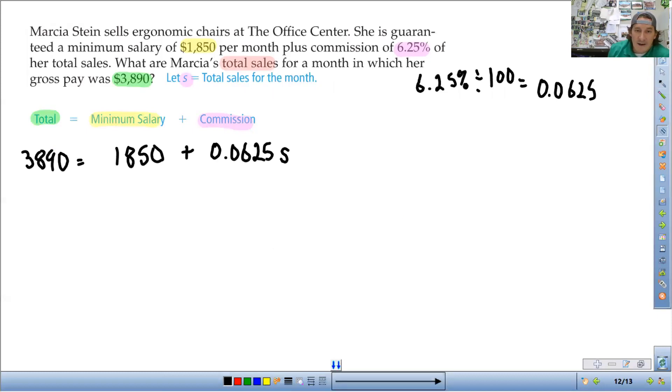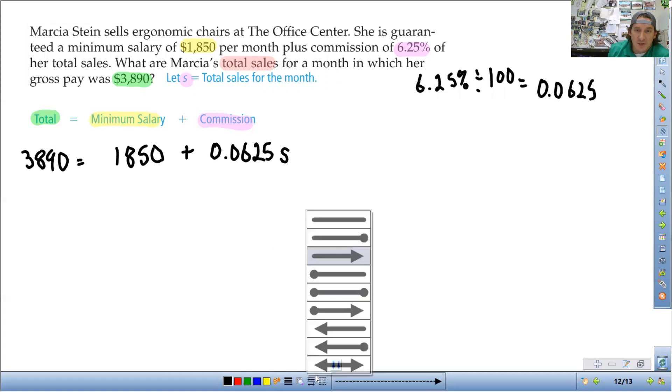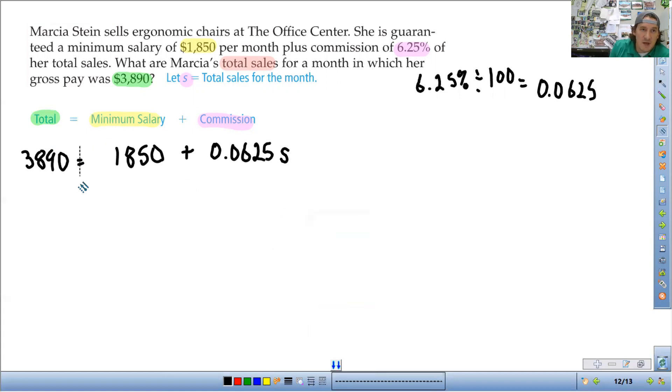And then we solve for S. To figure out how much she made, how many sales she made, so I'm going to put a little line of separation here just to help keep track of that equal sign. First thing I'm going to do is eliminate the 1,850 by subtracting it from both sides. So 3,890 minus 1,850 is 2,040.